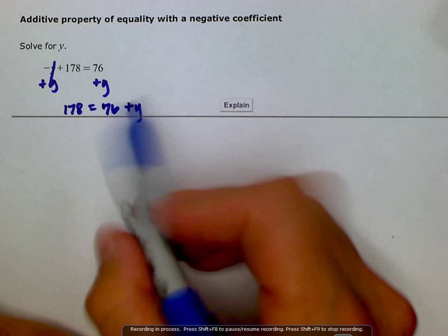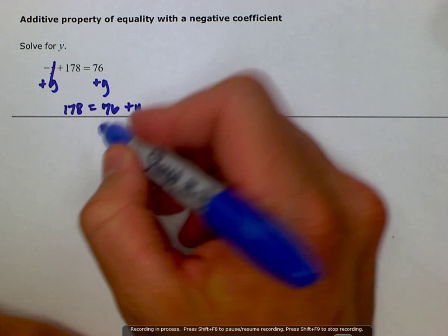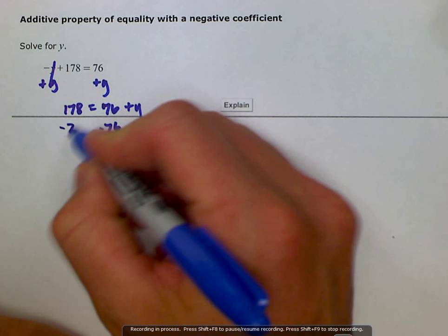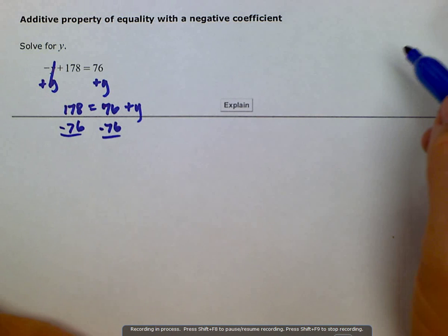Now we'll just subtract 76 from both sides. This is the subtraction property of equality. What we subtract from one side, if we subtract from the other, we still have a balanced equation.